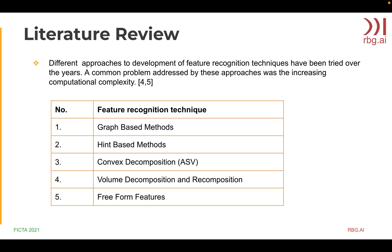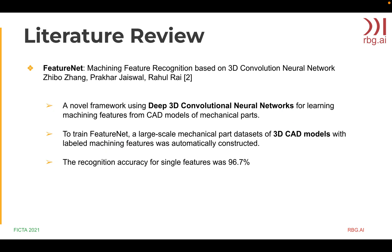Let us take a quick look at some projects that paved the way to the current work. Several approaches to the development of feature recognition have been made over the years, from graph-based methods to convex decomposition, and some of these are still in use. A common problem addressed by these approaches was the increase in computational complexity. The introduction of neural networks revolutionized feature recognition as it is excellent at recognizing patterns and is able to tolerate noise in input data. Some of the most influential recent works on 3D data representation and feature recognition are 3D ShapeNets, VoxNet, and PointNet. But the recent major work in machining features we have considered here is FeatureNet, which is based on 3D convolutional neural networks.